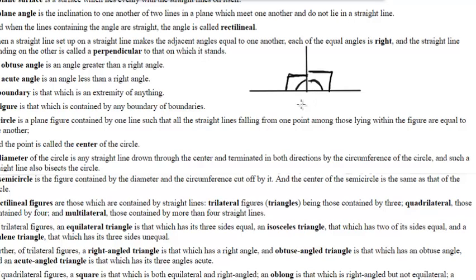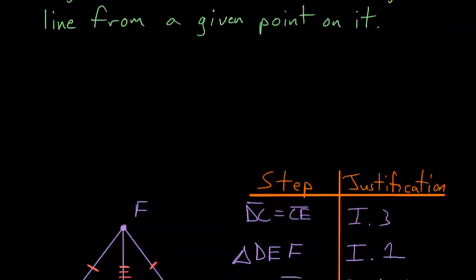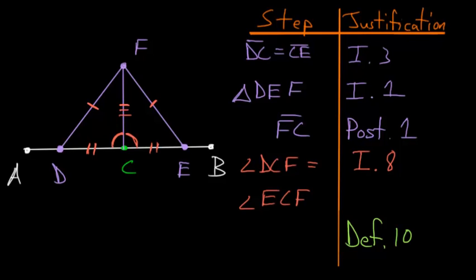With that in mind we can go back to our triangle here and notice that we've just proven that this angle here is equal to this angle here. We know because of Definition 10 that if we have these two lines AB and FC and if these two angles are equal, then these two angles are actually right angles and these two lines AB and FC are perpendicular.